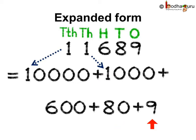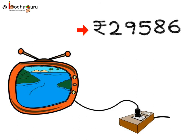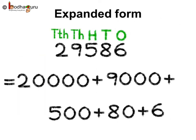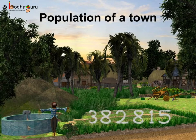The cost of a TV is 29,586 rupees. Write the cost of the TV in expanded form. So 29,586 has two ten thousands, nine thousands, five hundreds, eight tens and six ones. That is 20,000 plus 9,000 plus 500 plus 80 plus 6.